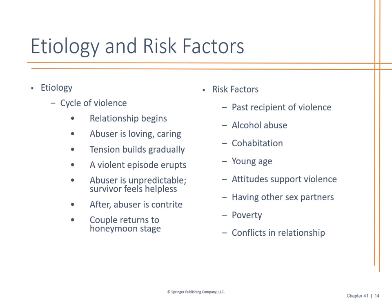Looking at the etiology and risk factors with the cycle of violence: there is a cycle. There's that honeymoon phase — as the relationship grows, tension builds, there's a violent episode, 'I'll never do it again,' and then it becomes more recurrent and everyday life. Risk factors include prior abusive relationships, alcohol or substance abuse, being young, prior sexual partners, poverty where they feel there's no way out, growing up around domestic violence, and conflict in the relationship where they don't know how to cope and just accept the behavior.